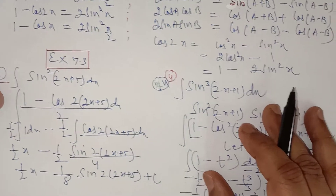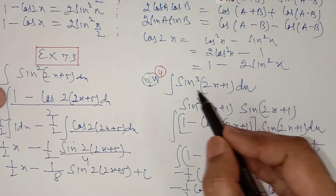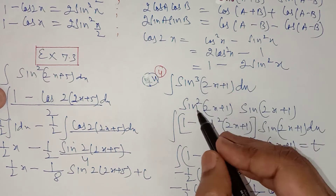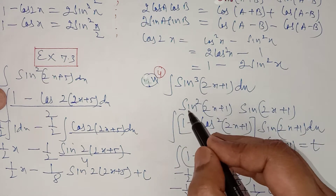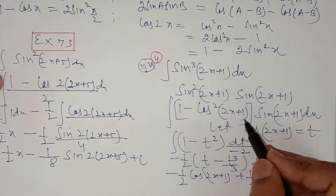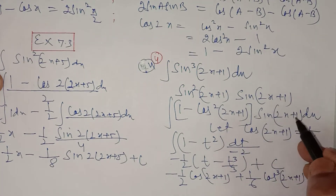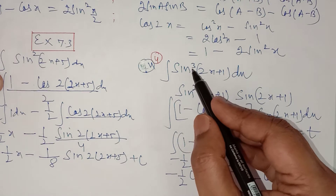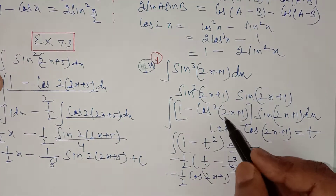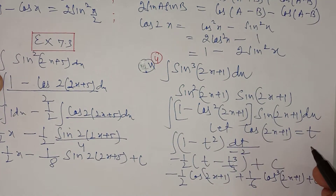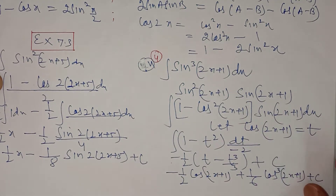Be very careful. In question number 4, it is sin³(2x+1) with respect to x. Whenever we have odd power, break it into even power times power 1. Convert sin²(2x+1) into 1 - cos²(2x+1). Now let cos(2x+1) = t, because the derivative of (2x+1) relates to sin(2x+1). So dt/dx = -sin(2x+1) · 2.